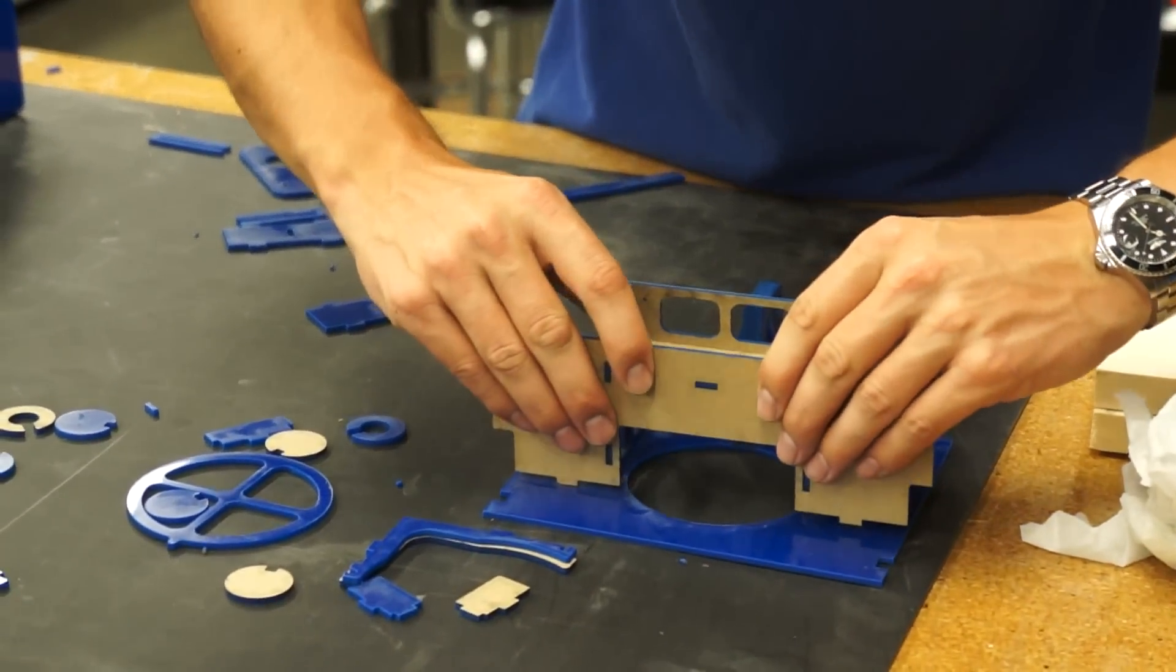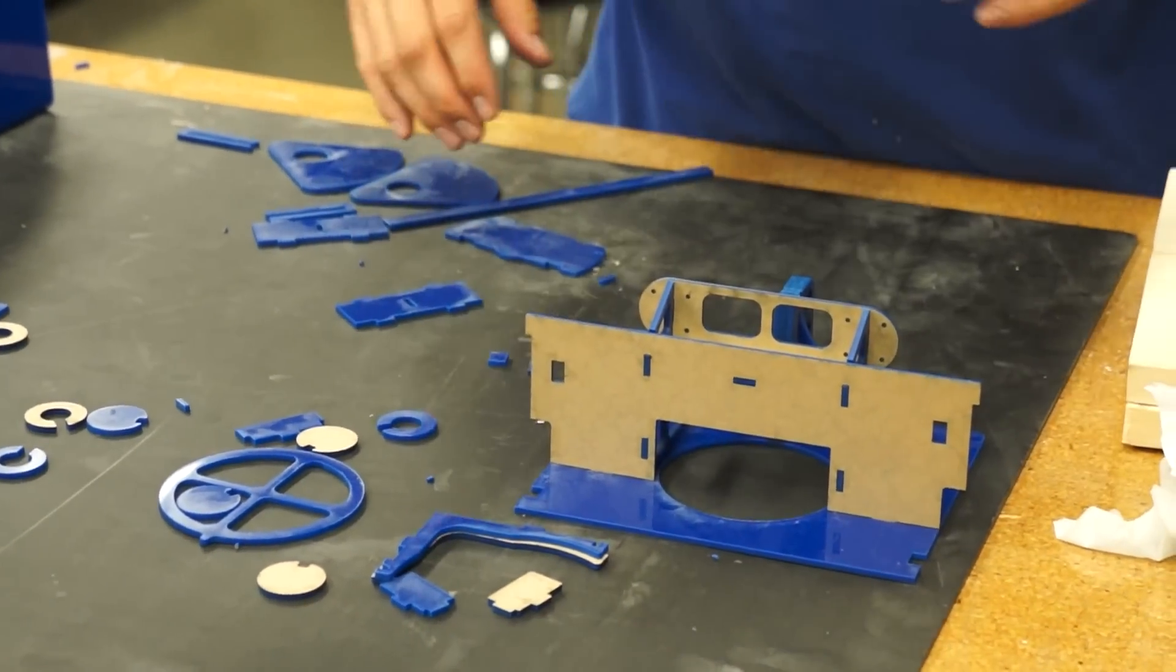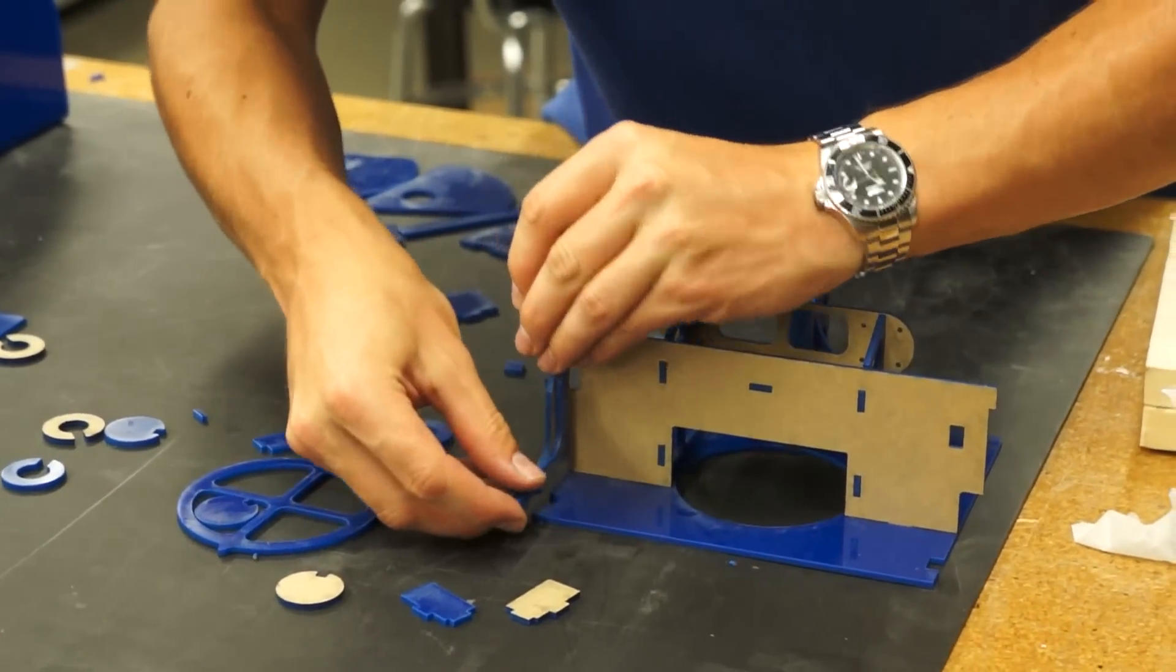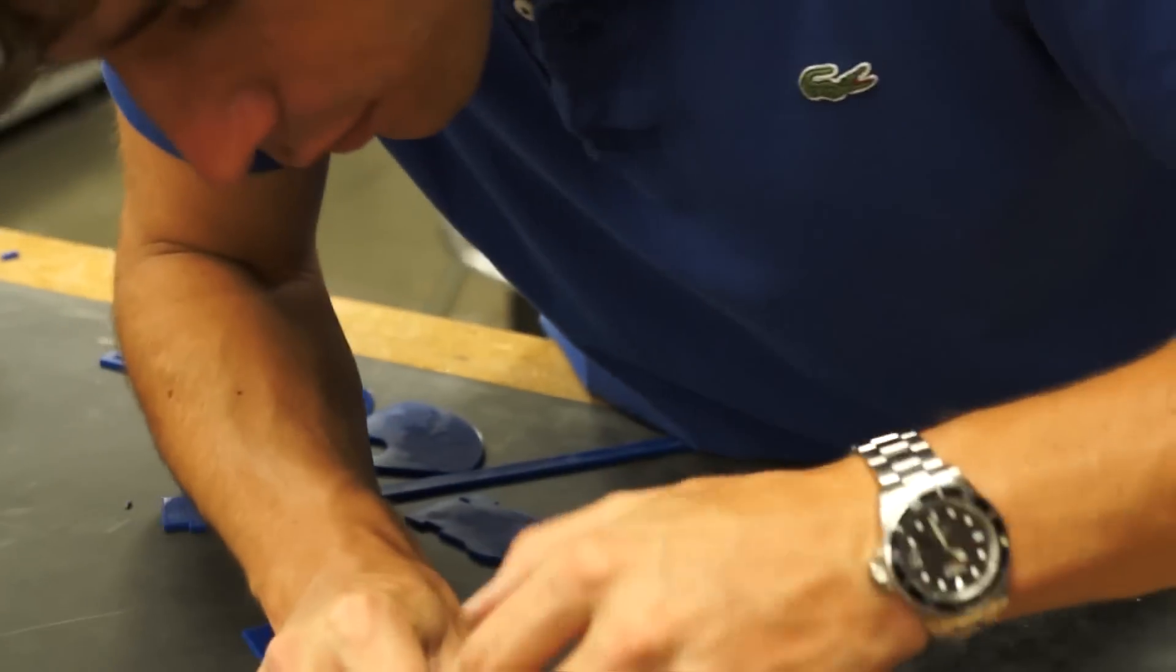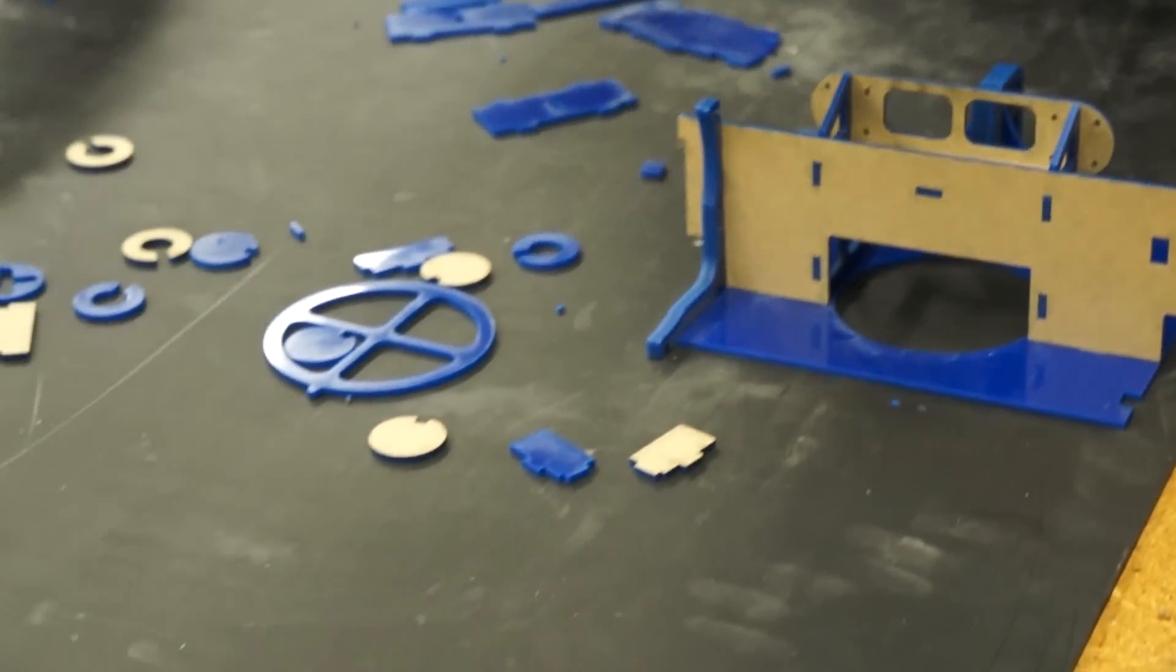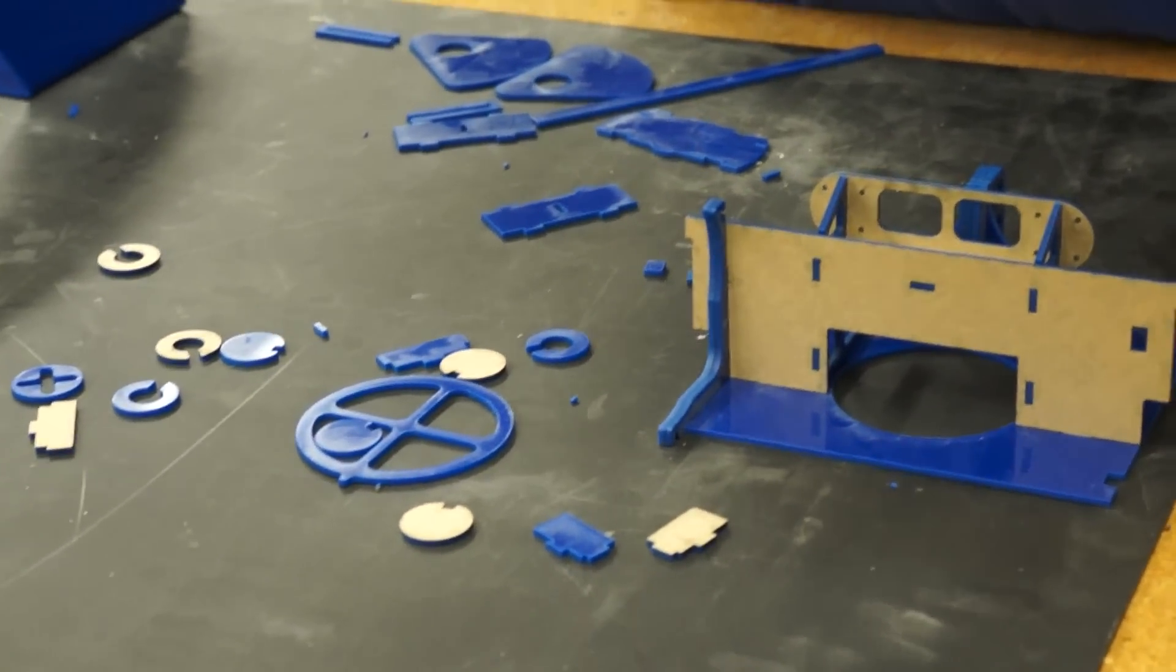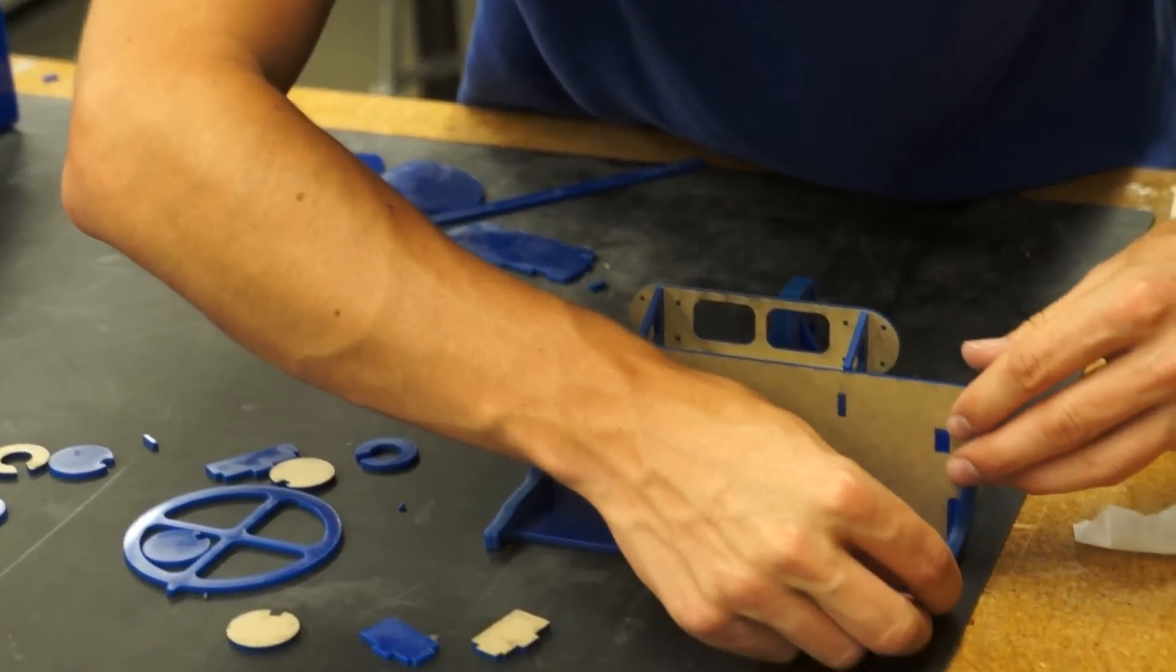These parts are really interestingly cut. That's really interesting. Yeah, these two pieces are designed to fit the circular. Yeah, so the tube fits into the place here. And then this hole is where the wire that goes behind the tube fits. No, no.